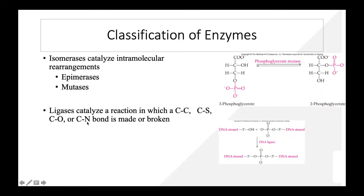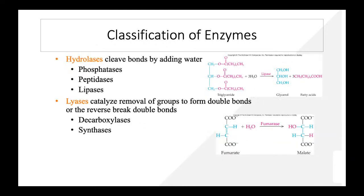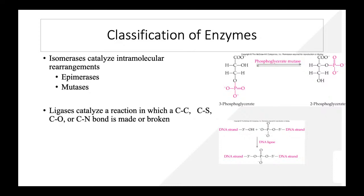Ligases catalyze reactions in which C–C, C–O, and C–N bonds are formed — also called synthetases. They catalyze bond formation by combination of two compounds in condensation reactions using ATP. Examples include DNA polymerase and DNA ligase. For instance, two DNA strands — one with a hydroxyl group, one with a phosphate group — are joined together by ligase. Those are all six enzyme classes: oxidoreductases, transferases, hydrolases, lyases, isomerases, and ligases.